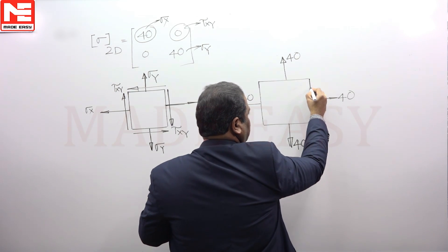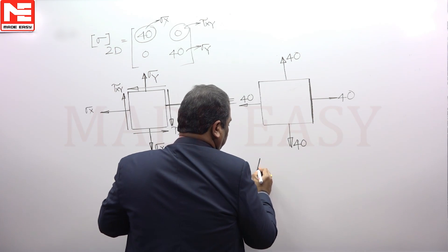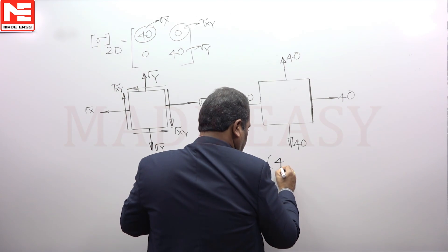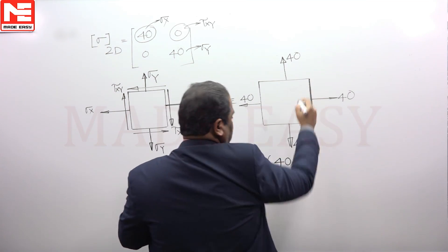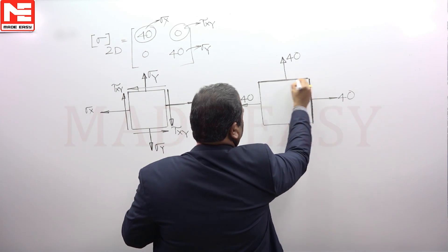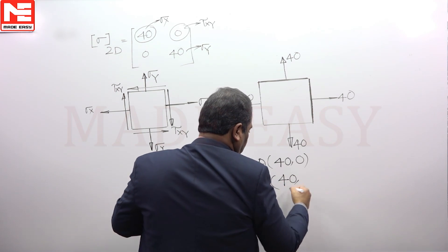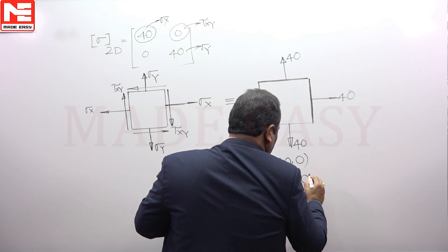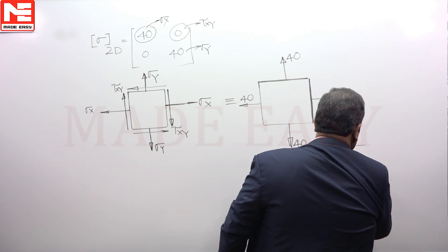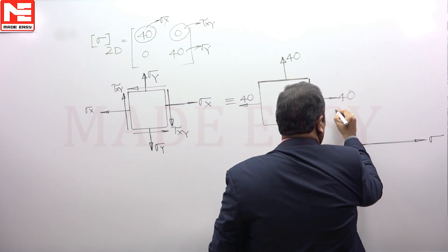Now to draw the Mohr circle, you always first have to define the state of stress. Point A is representing the state of stress on the x-face — on the x-face only normal stress is there, since shear stress is going to be 0, so the y-coordinate is 0. Point B is representing the state of stress on the y-face; on the y-face there is also normal stress, so the x-coordinate of point B will be 40 and y-coordinate is 0. For the Mohr circle, the x-axis represents normal stress and the y-axis represents shear stress.